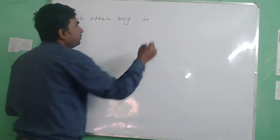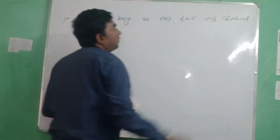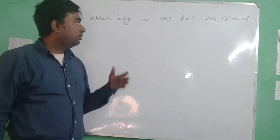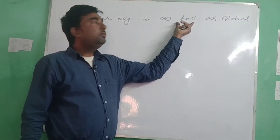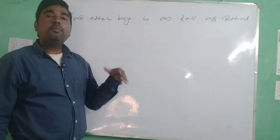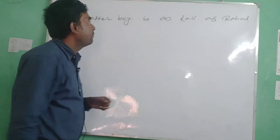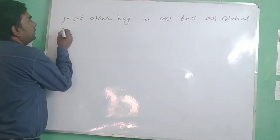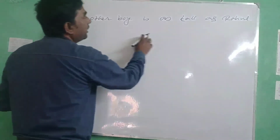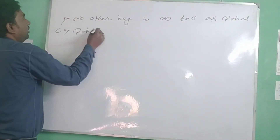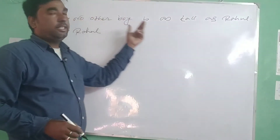The positive degree sentence is: 'No other boy is as tall as Rahul.' When you transform it into comparative degree, the degree word 'tall' gets '-er' added to it. The format of the sentence changes — in comparative degree, we use 'than any other.' The sentence begins with 'Rahul,' the noun found at the last portion of the original sentence.